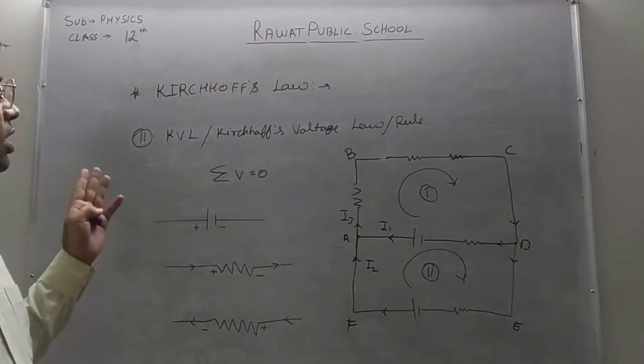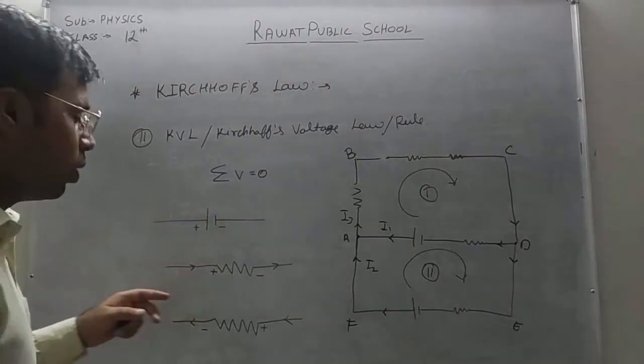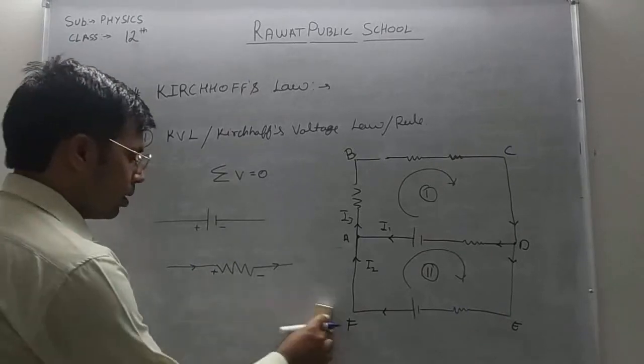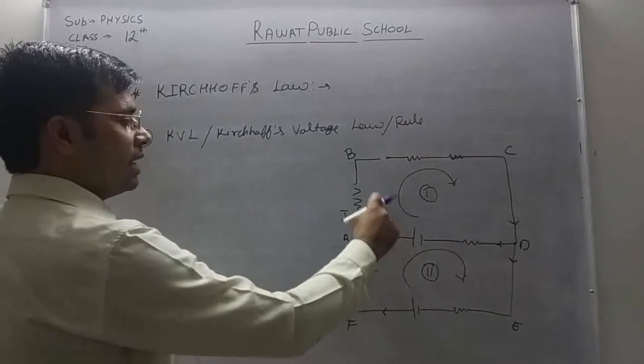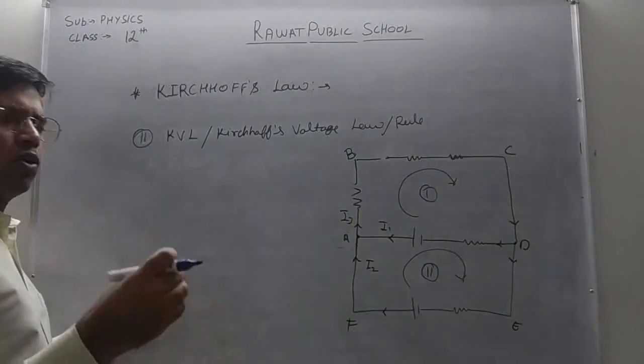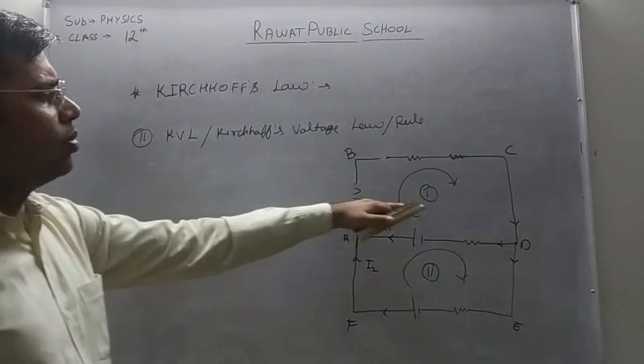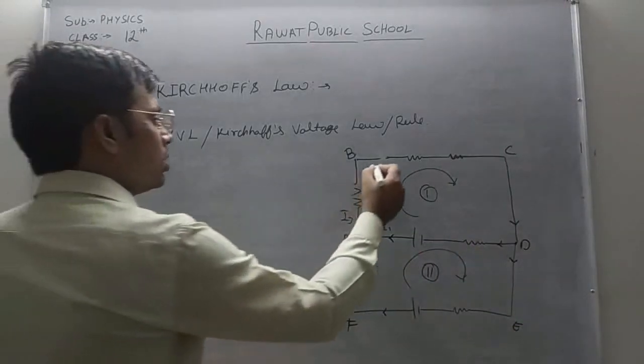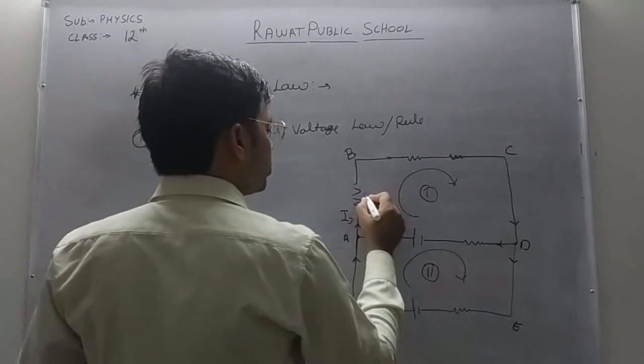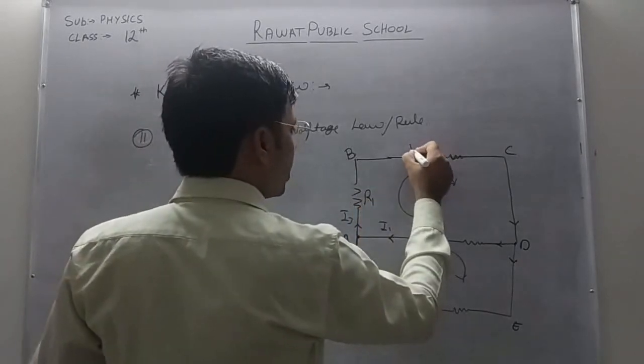So, this is Kirchhoff's voltage rule. And how to apply this rule? Us tihs ko bhi haom dekhi rute hain. Hum kya karayenge? Loop decide karne ke baad, we will decide the direction of traversal. Koi bhi aak direction haak sakte hain. Jaroor nahi hain hain hain clockwise ho. Anti-clockwise bhi lehe sakte hain.